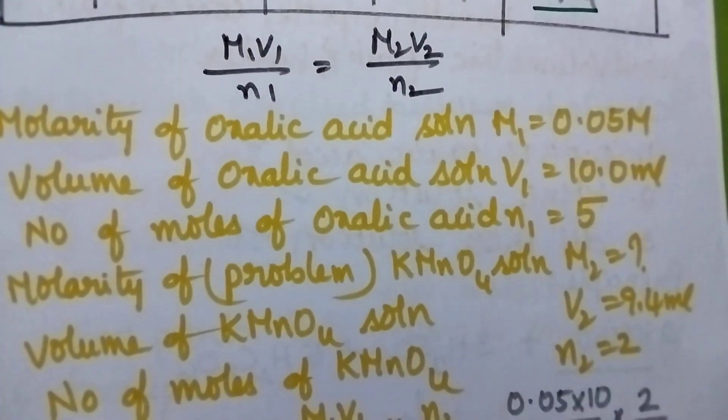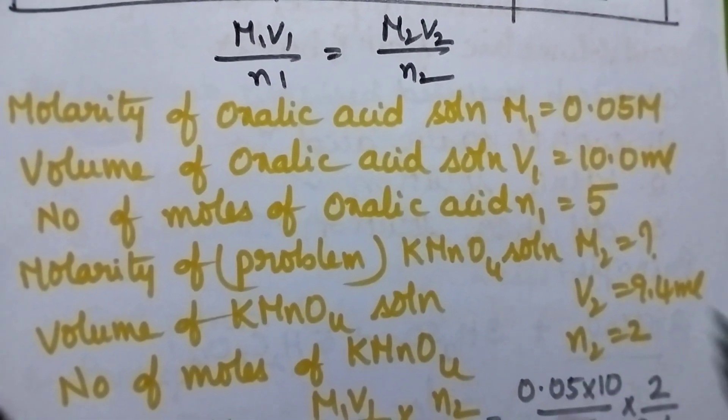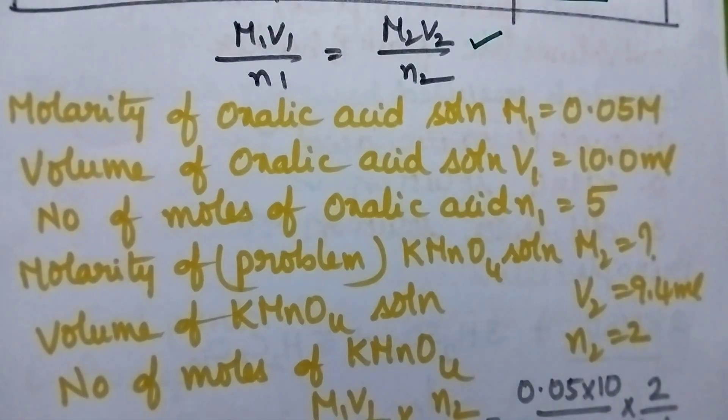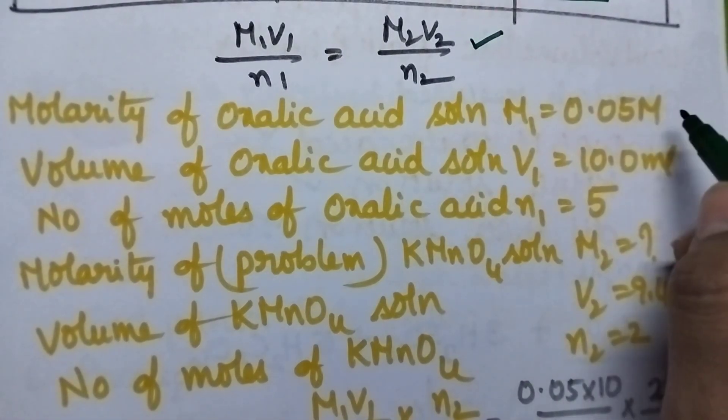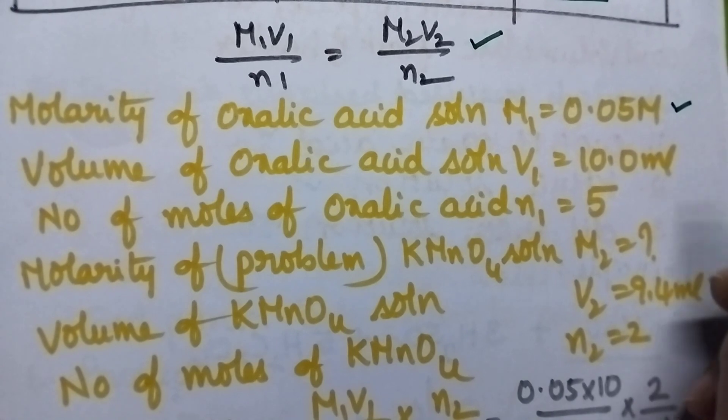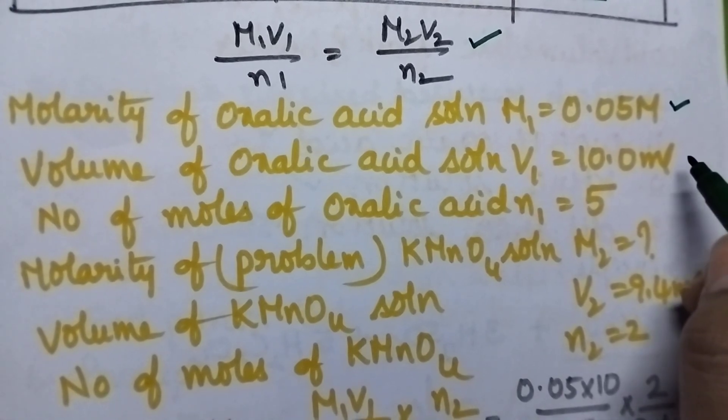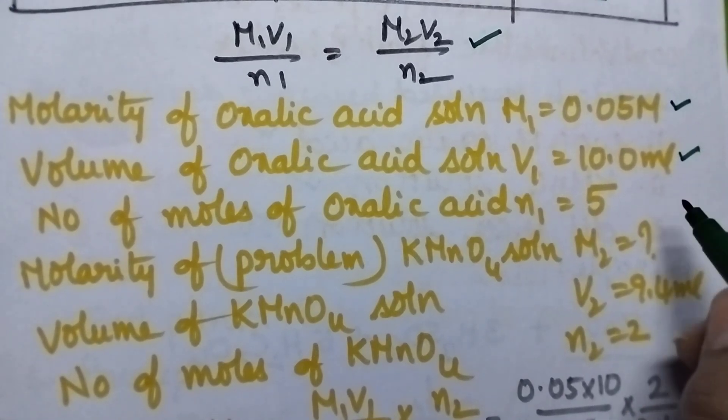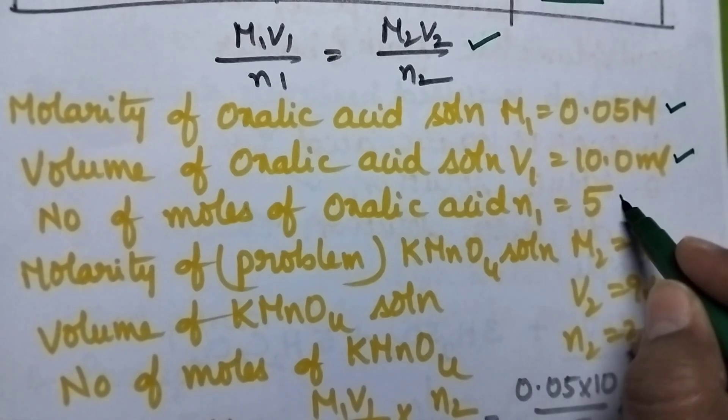The formula used is M1V1/N1 = M2V2/N2. Molarity of oxalic acid solution M1 is 0.05 molar. Volume of oxalic acid solution V1 is 10 ml. Number of moles of oxalic acid N1 is 5.